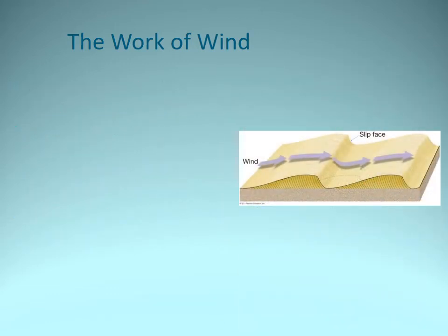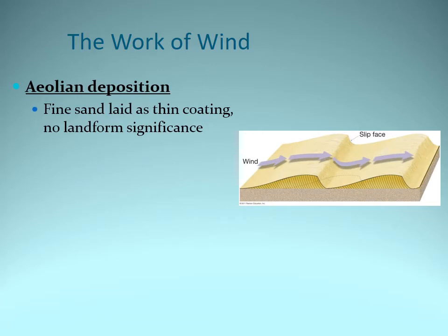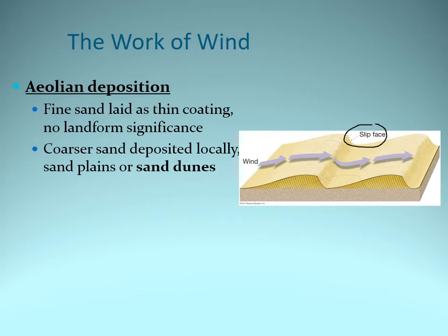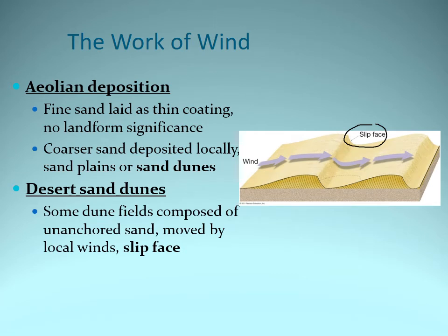We're going to focus on one type of desert feature: the sand dune. When there is fine sand and not a lot of sand, we don't really get any significant landforms. One term I want to define is the slip face, which is the side of the sand dune not facing the dominant wind. In places where there is coarser sand and a lot of sand, we can get our characteristic sand dunes. Sand dunes actually move with the wind, and we can get a sense of what the wind is doing in a desert based on the shape and movement of sand dunes.